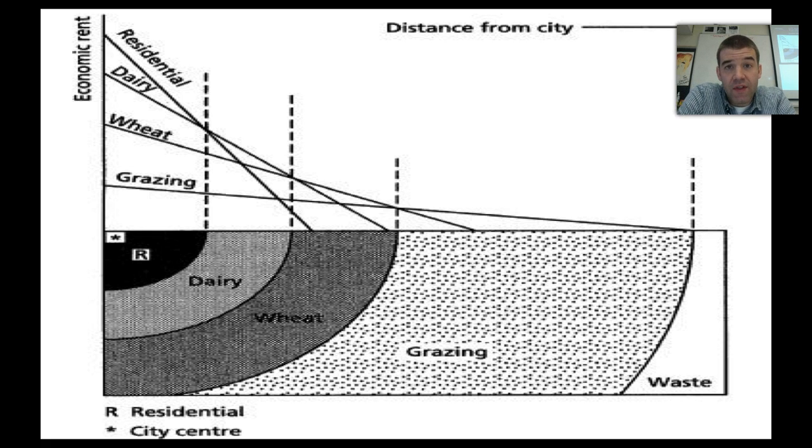And dairy products, given that they especially in the 1800s spoiled and perished and were very bulky, they tended to be closer to that market center as well. And those would be the next expensive place to live.